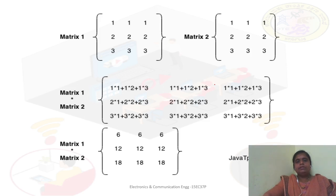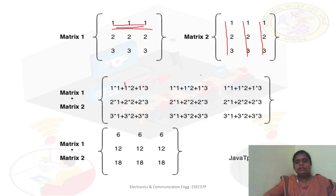As you know about the multiplication of two matrices from mathematics, we will consider the first row and the first column, then the first row and the second column, and first row and the third column. We will get the first three elements of the first row. The indices start with 0, so the subscripts are: 0th row and 0th column, 0th row and 1st column, 0th row and 2nd column.